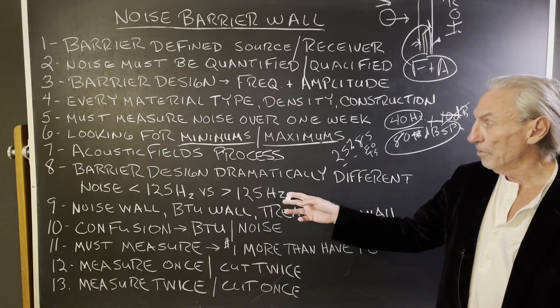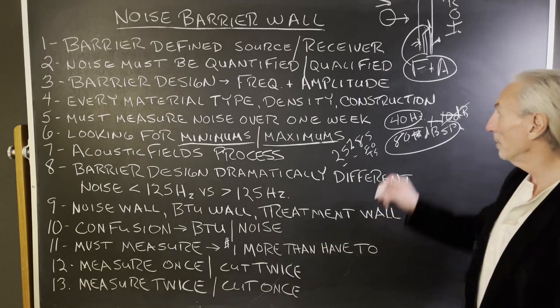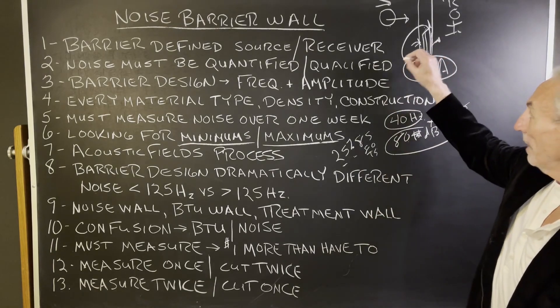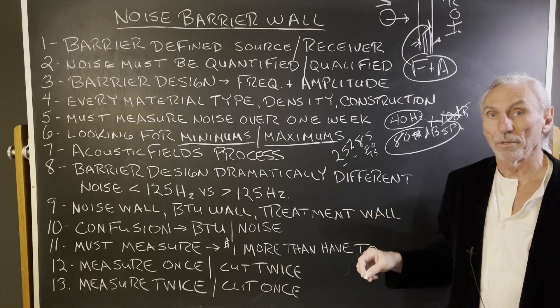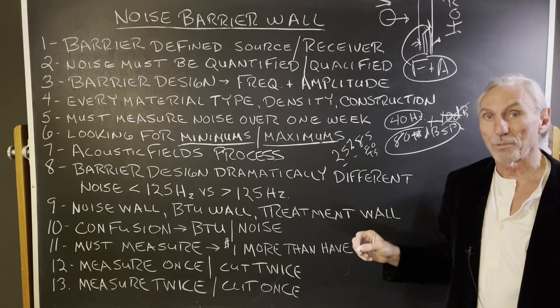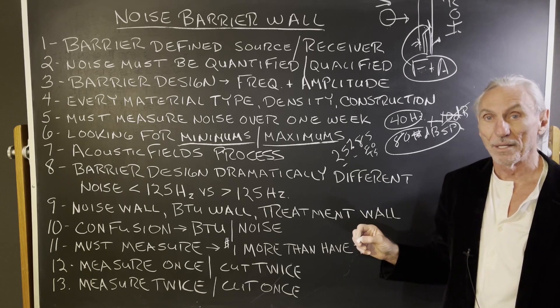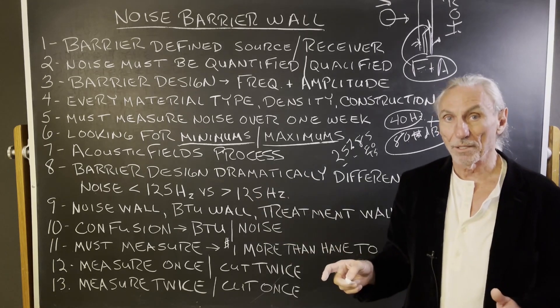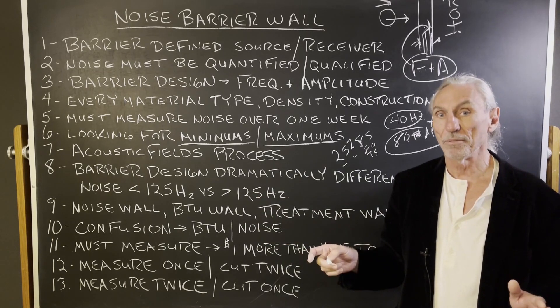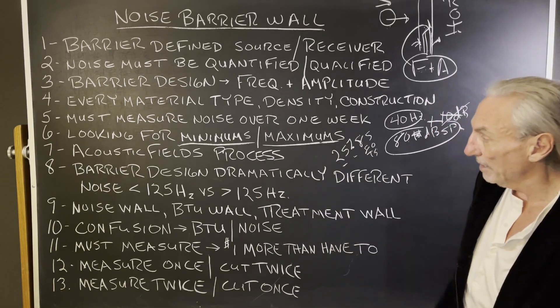We got to realize that the noise below 125 cycles is way different in terms of barrier design. If I put two designs here on the board and said which one is for below 125 and which one is above 125, you'd be able to pick them out immediately because this one below 125 is going to be thicker, denser materials and different structural arrangements, different construction methodology. You'd see it in a second.